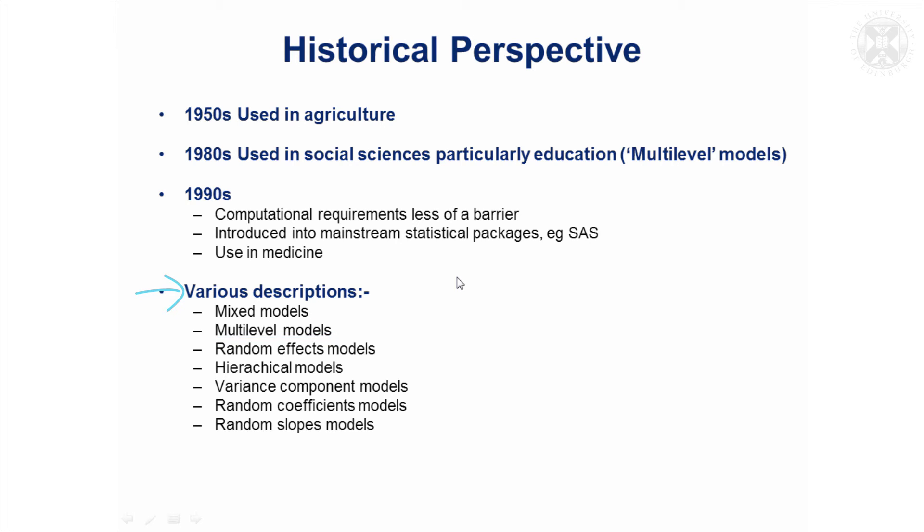And all these other descriptions also encompass mixed models: random effects models, hierarchical, variance component models—they're just mixed models without any fixed effects in—random coefficients, random slopes models. They're all types of mixed model as far as I'm concerned.